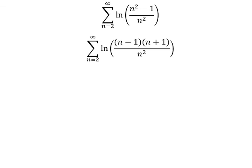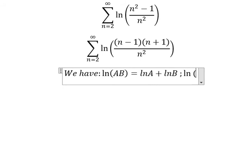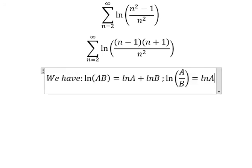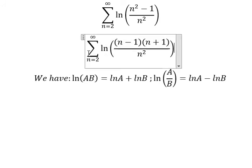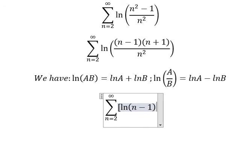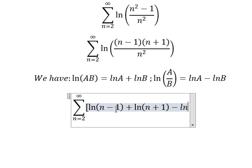Next we have the formula here: ln of AB equals ln A plus ln B, and ln of A divided by B equals ln A minus ln B. So in this situation we will have ln of n minus 1 plus ln of n plus 1 minus ln of n squared.